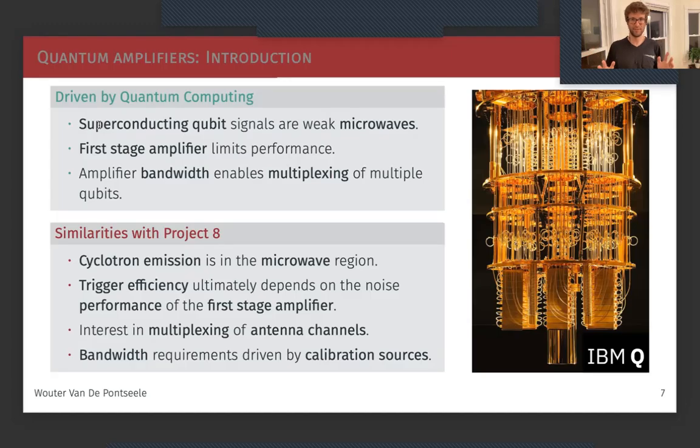So let me first sketch the field a little bit. These quantum amplifiers are really driven by quantum computing because quantum computers consist of superconducting qubits and their signals are very weak microwaves. Often the first stage amplification of these microwaves limits the performance. The amplifier bandwidth is very important because this enables the multiplexing of multiple qubits in your quantum processor.